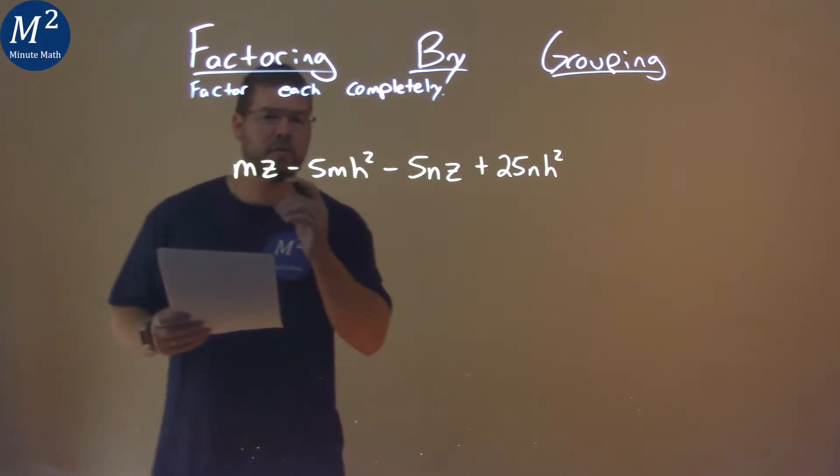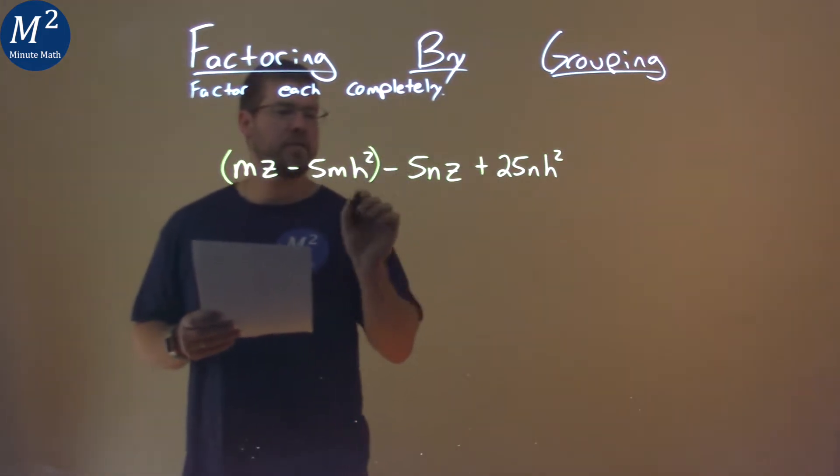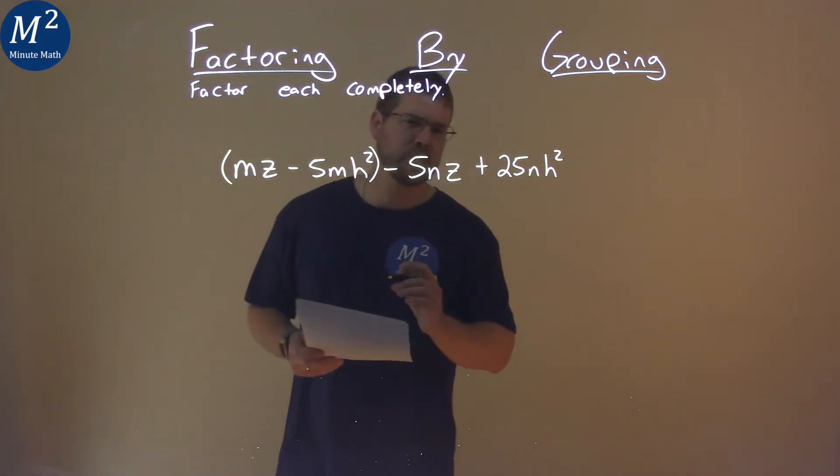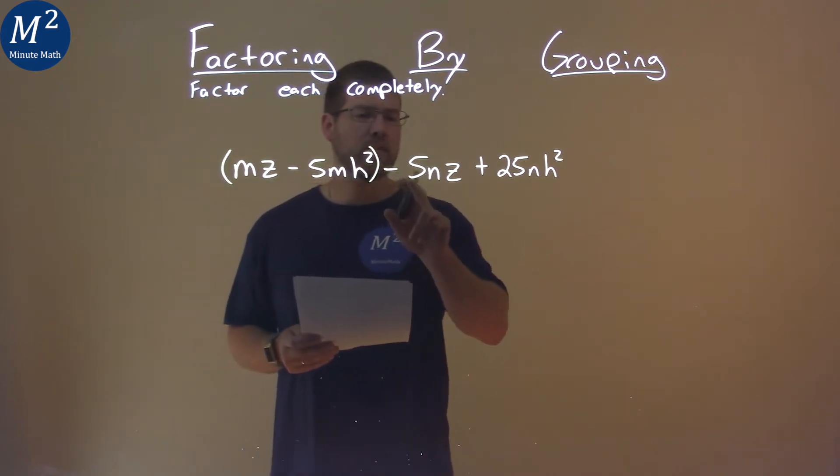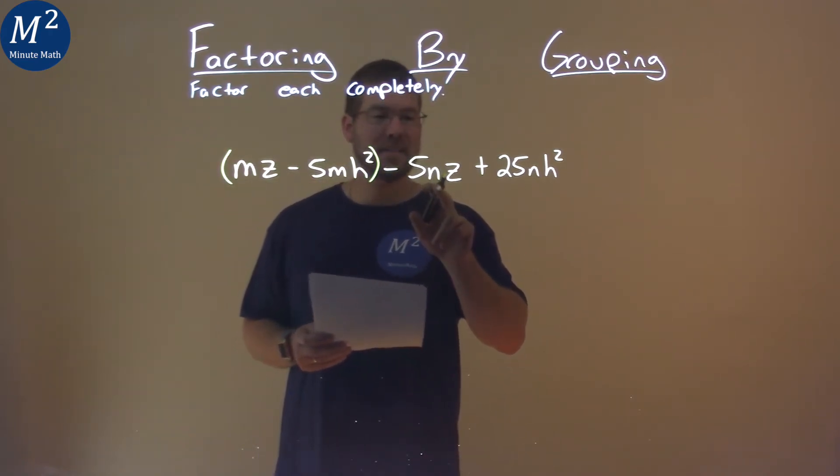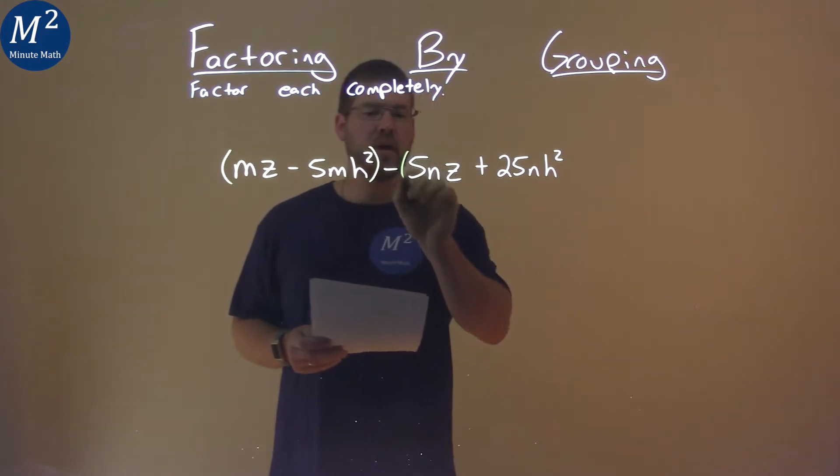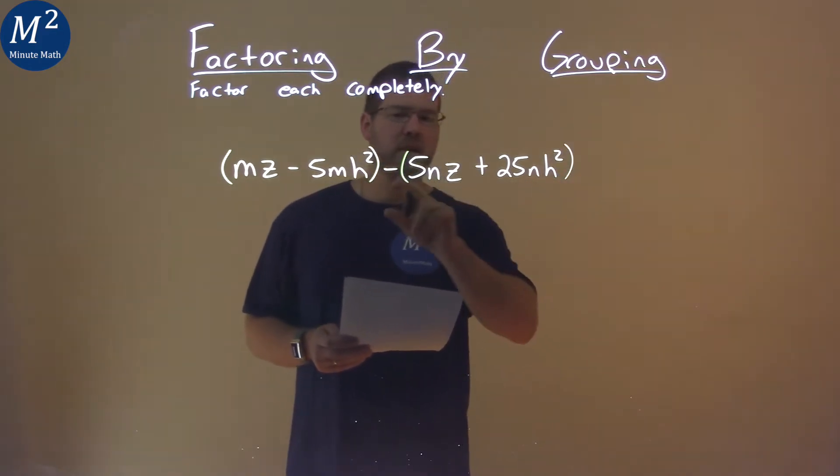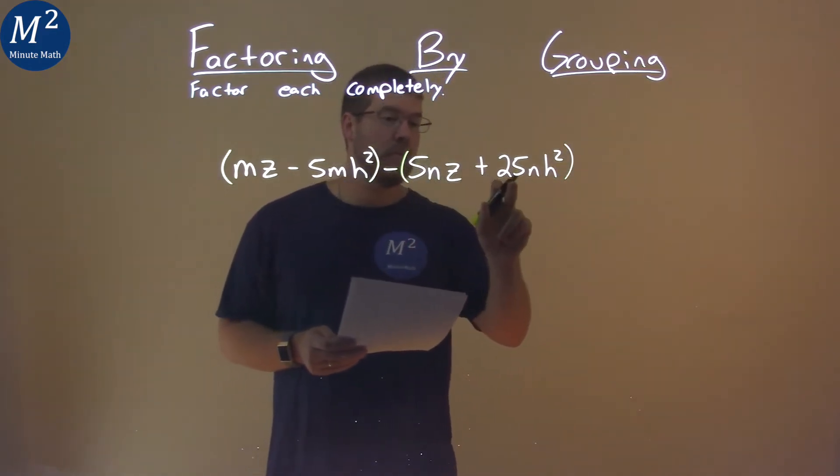First thing I like to do is group the first two terms together and the second two terms together. The second two terms becomes tricky. The minus sign here goes to the 5nz, but not the 25nh squared. By putting a parenthesis here, that would make this minus sign distribute to both parts.